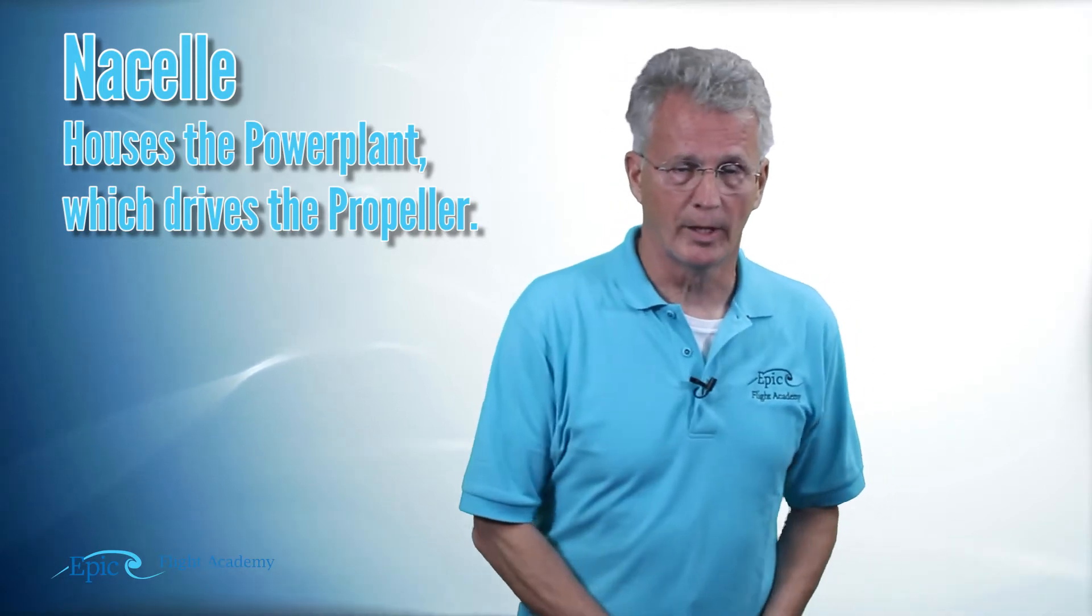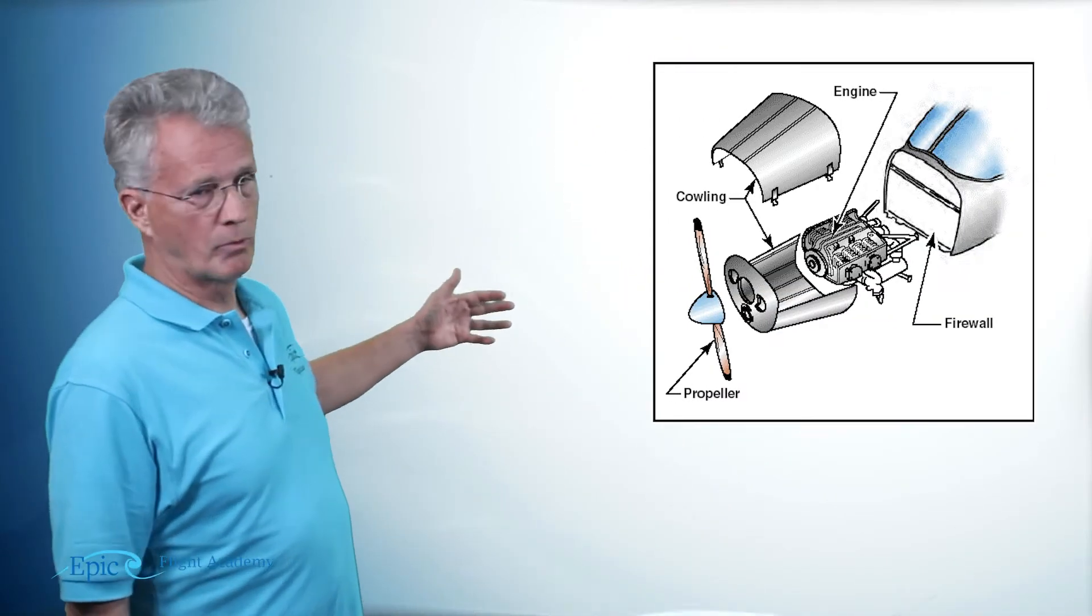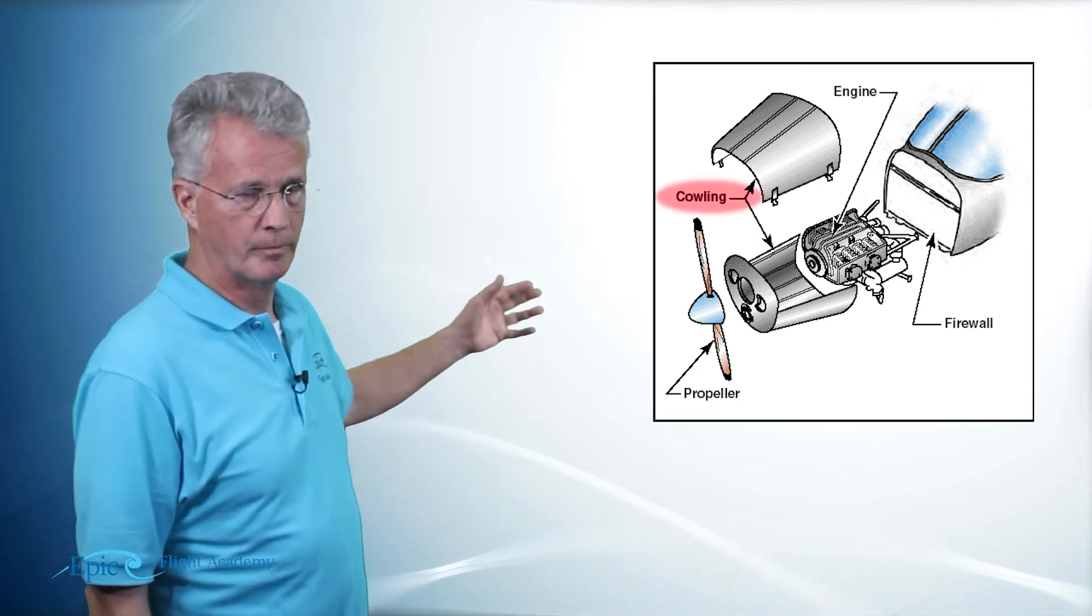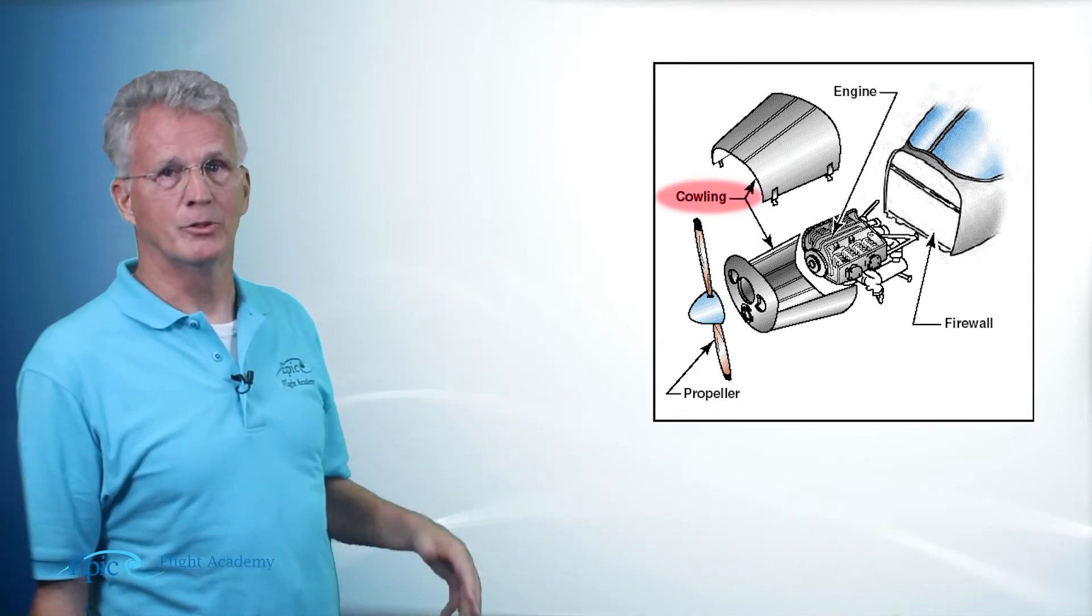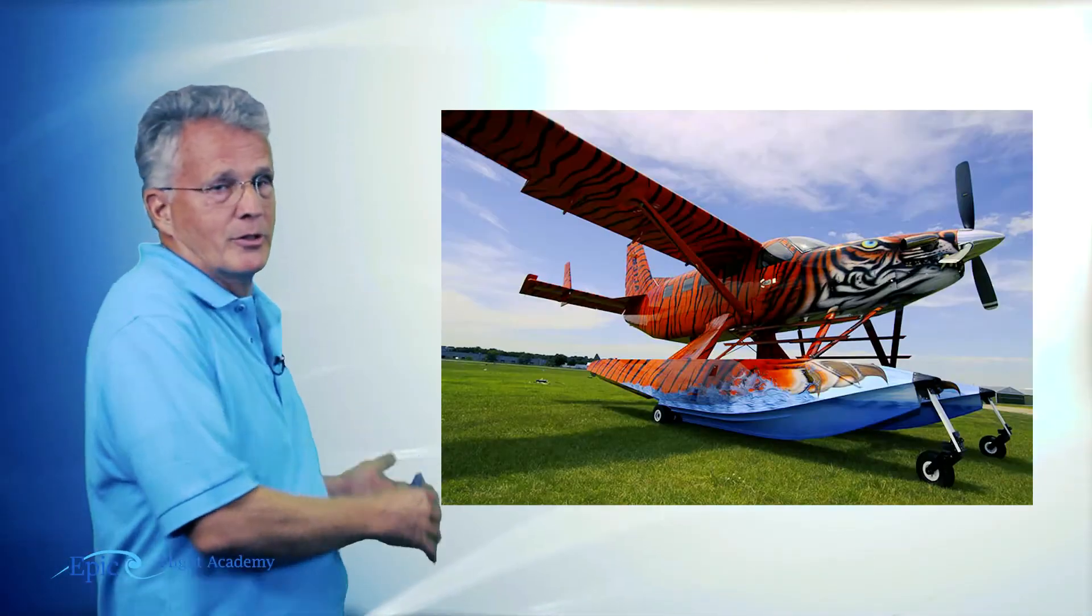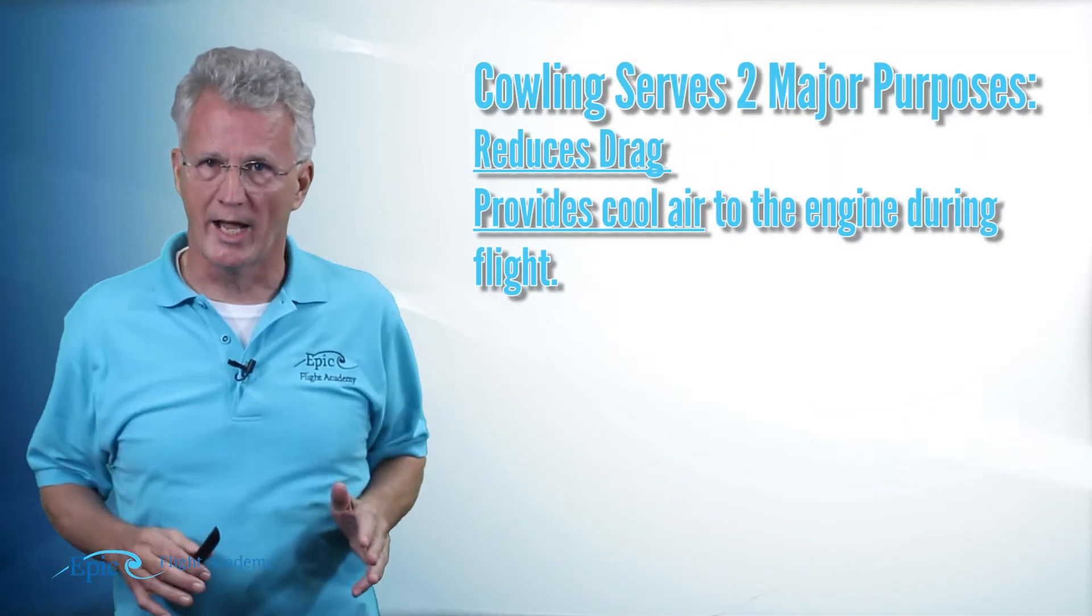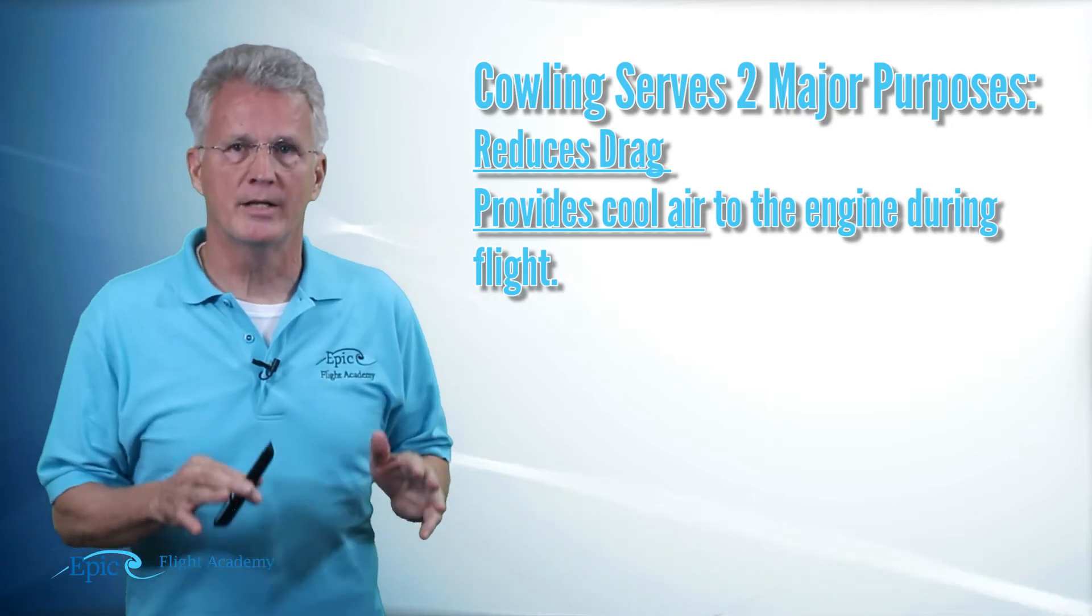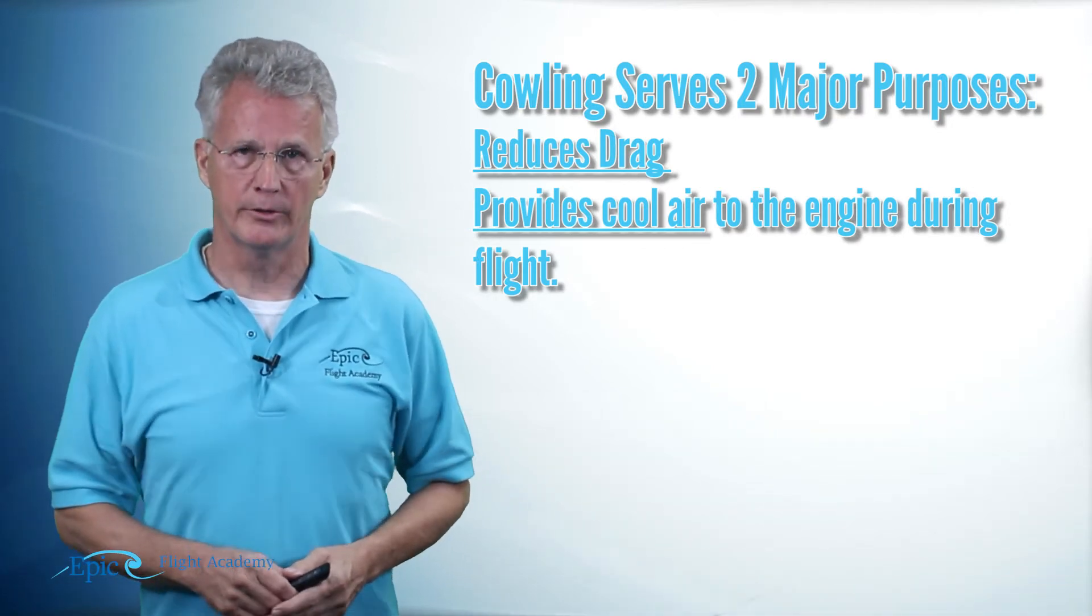This power plant is surrounded by what we call a cowling. Now the cowling isn't just for cool paint jobs, although cool paint jobs are a part of it. Primarily the cowling serves two purposes. It reduces drag and it provides air cooling to your engine.